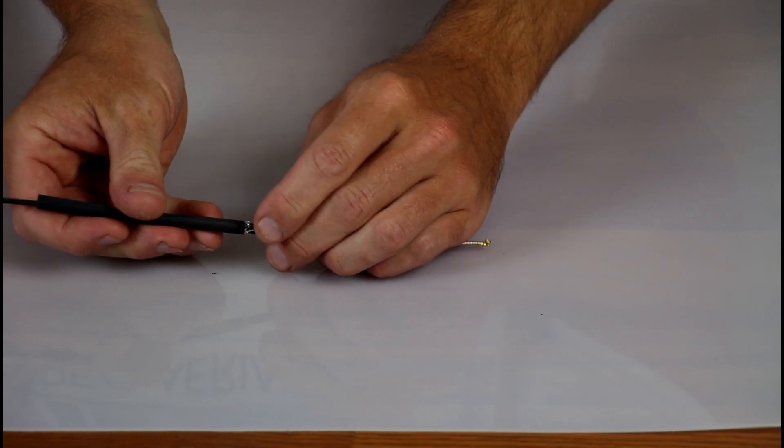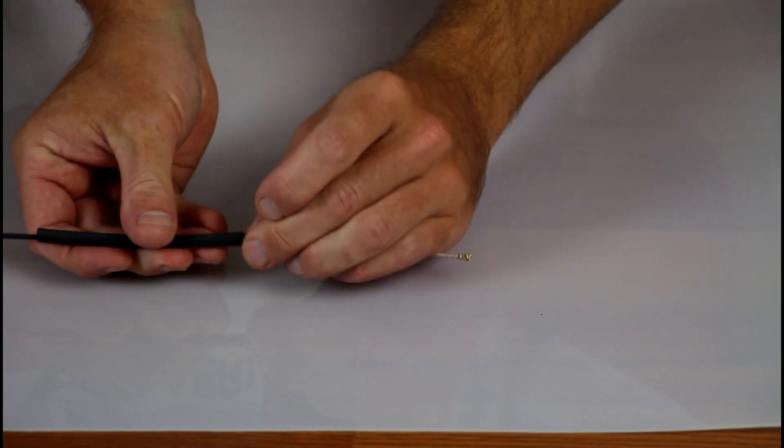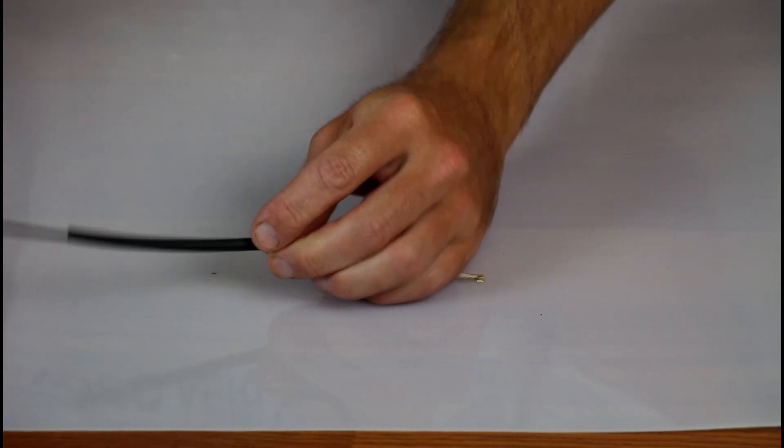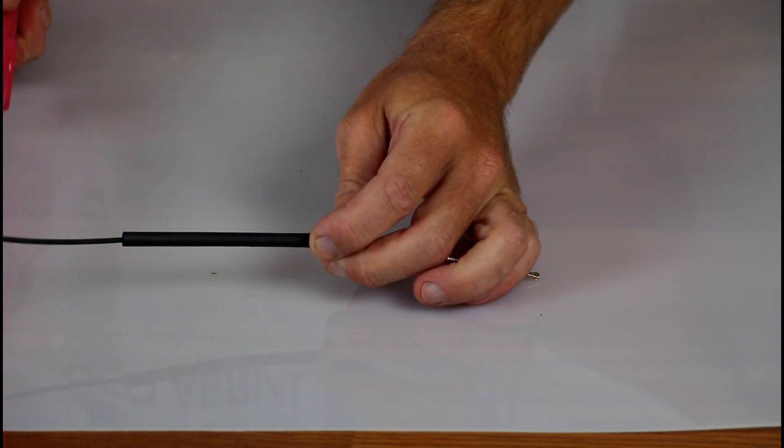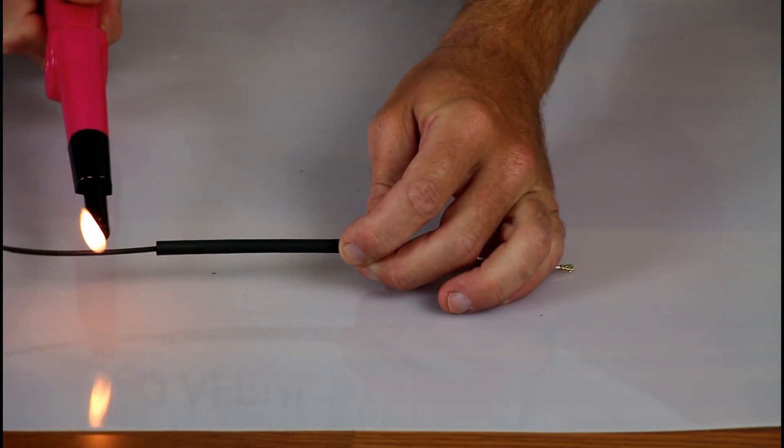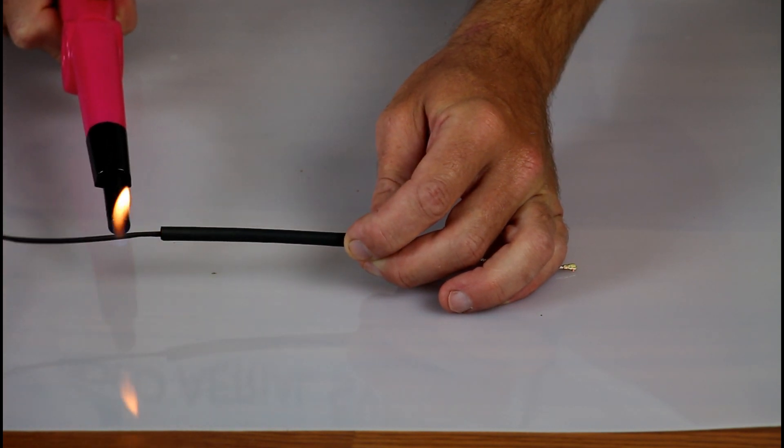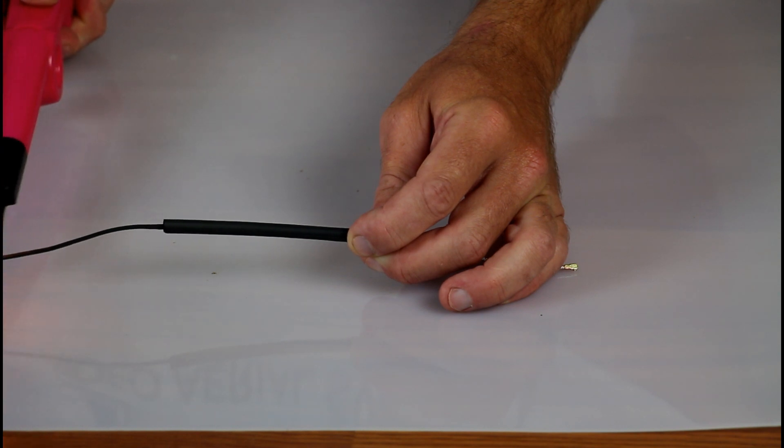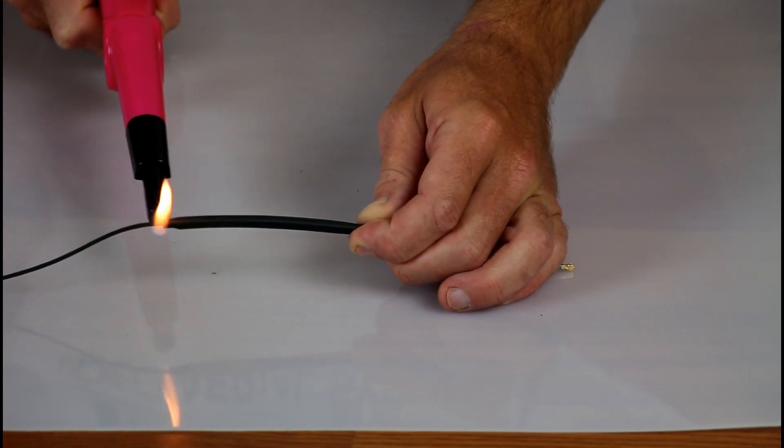Now you can go ahead and install your heat shrink tubing. When shrinking it down be very careful not to over shrink the area over the braid. Adding too much heat to the area over the braid can cause the internal 1 1/8 inch cable to shrink down and will ruin the air gap that inside that makes the antenna work.